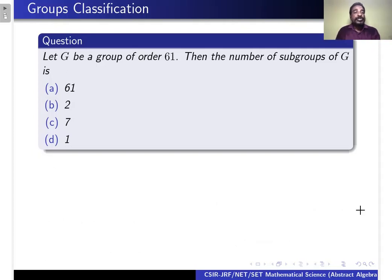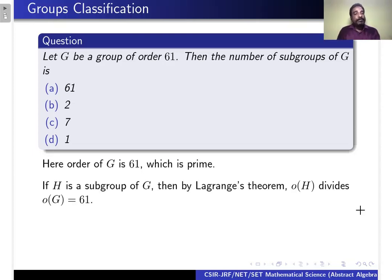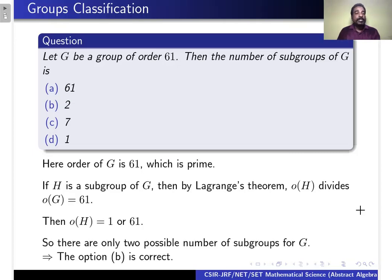The next question is: let G be a group of order 61. Then the number of subgroups of G is — the options are 61, 2, 7, and 1. The order of the group is 61, which is prime. If H is a subgroup of G, then by Lagrange's theorem, the order of H divides the order of G which is 61. Therefore, the order of H is either 1 or 61. Therefore, there are only two possible subgroups of G. Therefore, option B is correct.